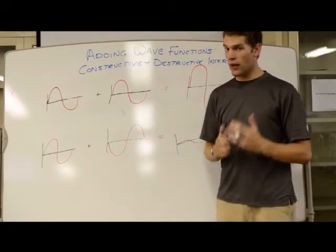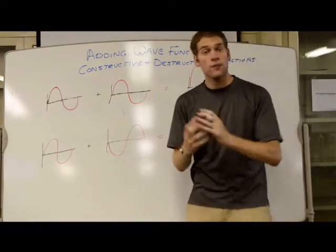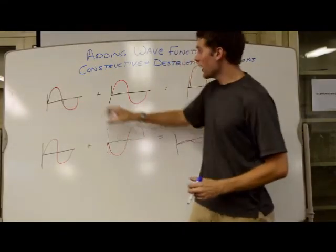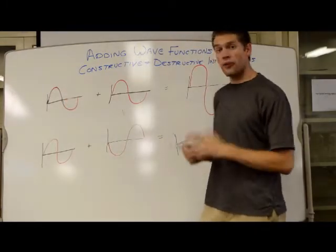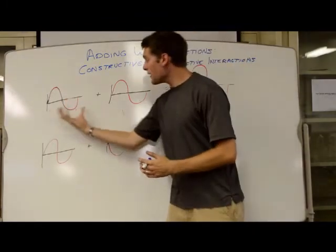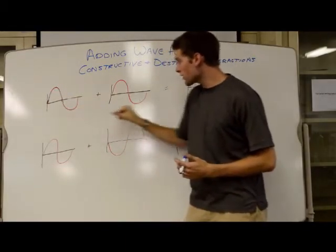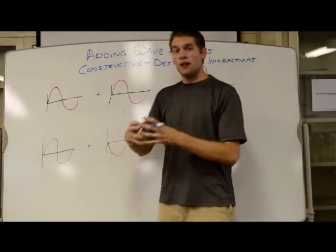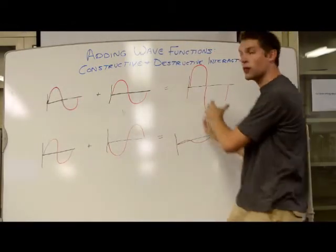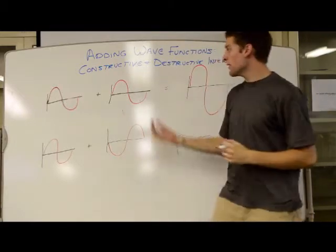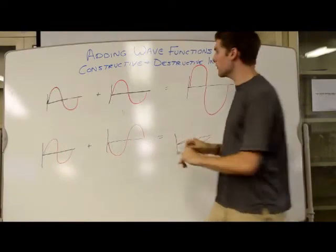Now, because electrons are waves and they can be represented by mathematical functions, we can add them and subtract them together. In this top example here, I have two electrons, both being represented by a wave. And you should remember from math or from physics, that if you add two waves that are in sync with each other, where the peaks correspond and the troughs correspond, they have this augmenting effect, and they get bigger. So the corresponding peaks and the corresponding troughs get larger as the sum of these two. We call this, when it happens with electrons, a constructive interaction.